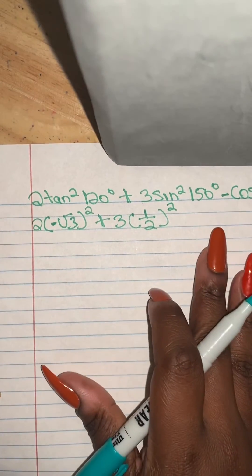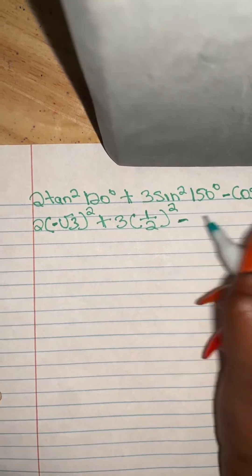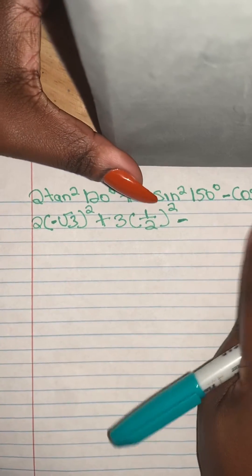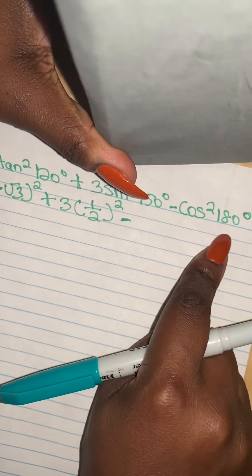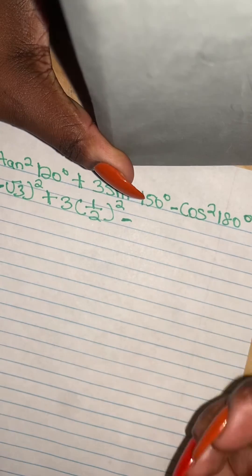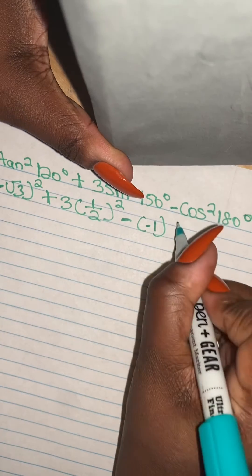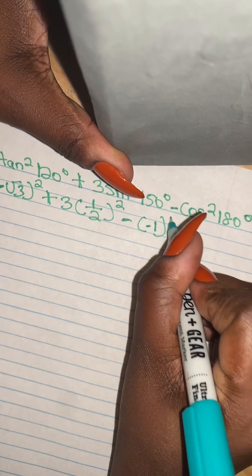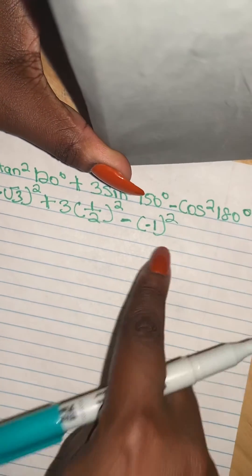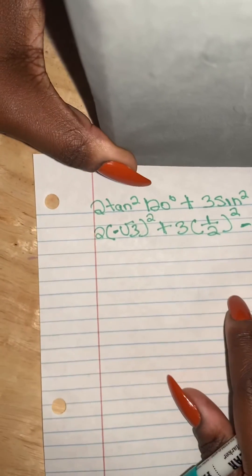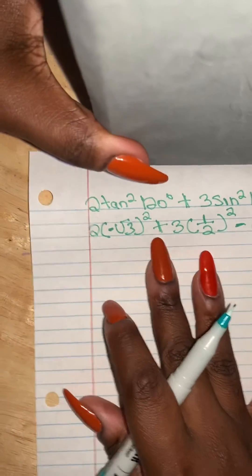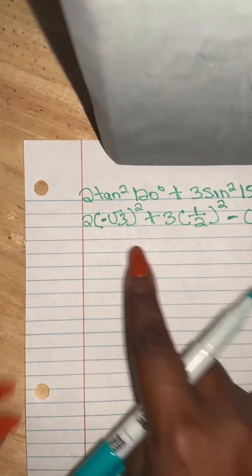And then we continue on with our problem. What is the value of cosine of 180 degrees? It's just negative one. And then we're also going to keep in consideration the exponent as well.